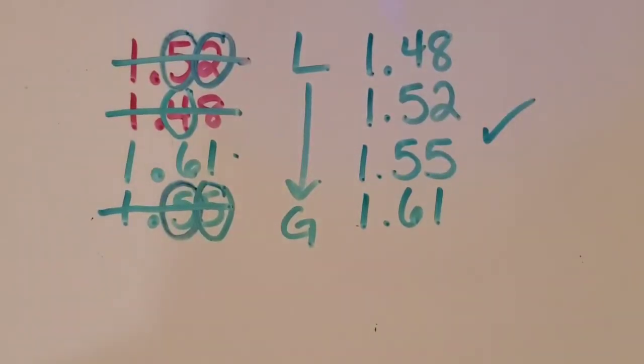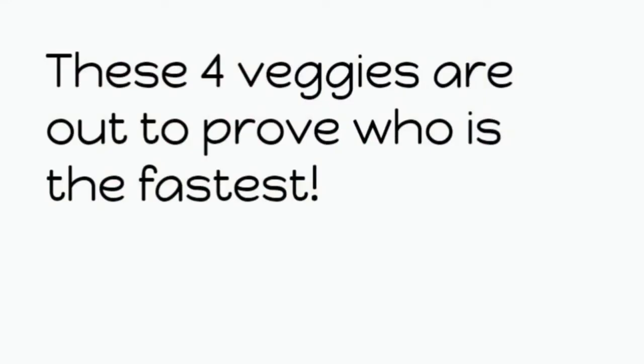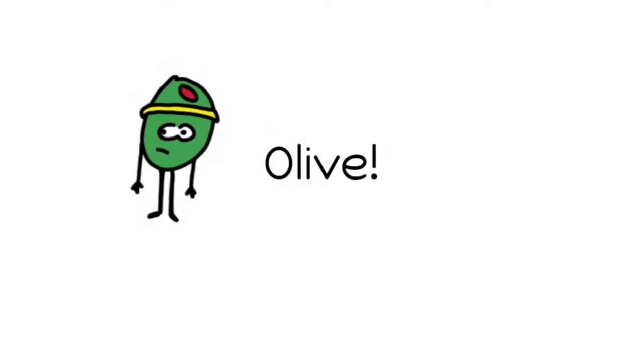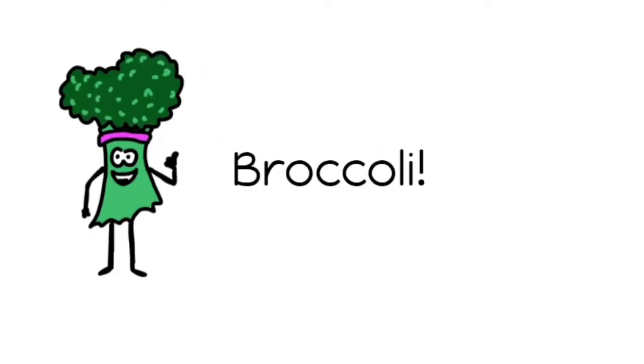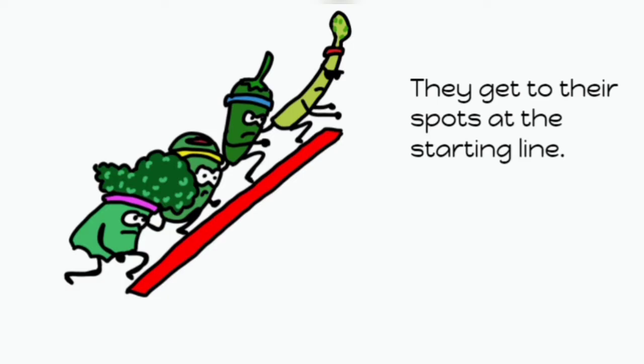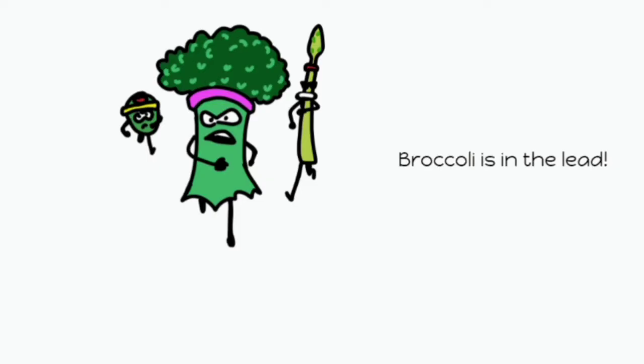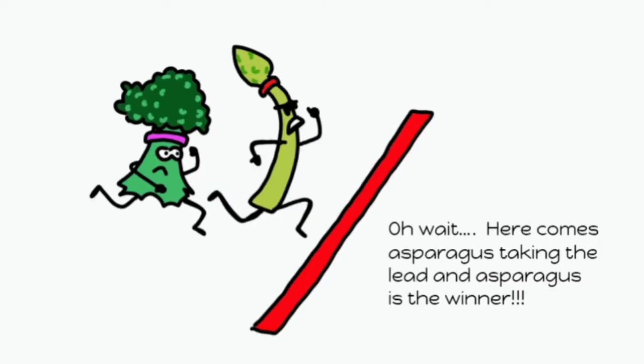Now we're going to try another example with this fun problem that I made up for you with illustrations. These four veggies are out to prove who is the fastest. Asparagus, olive, jalapeno, broccoli. They get to their spots at the starting line. And pow, they're off! Broccoli is in the lead! Oh wait, here comes asparagus taking the lead, and asparagus is the winner!